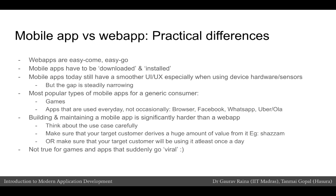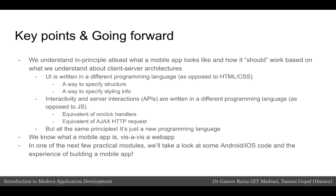These points are more business and product development related and may change as mobile phones and browsers improve. Key takeaways are to understand in principle what a mobile app looks like. If it has a UI component, it must have some equivalent of HTML and CSS to write the UI. If it provides interactivity or talks to a server to fetch data, it must have equivalents of onclick handlers and Ajax/HTTP requests used in JavaScript. The same principles apply to a mobile app as to a web app, but the programming language and environment differ. In the next few practical modules, we will look at Android and iOS code and what the experience of building a mobile app is like.